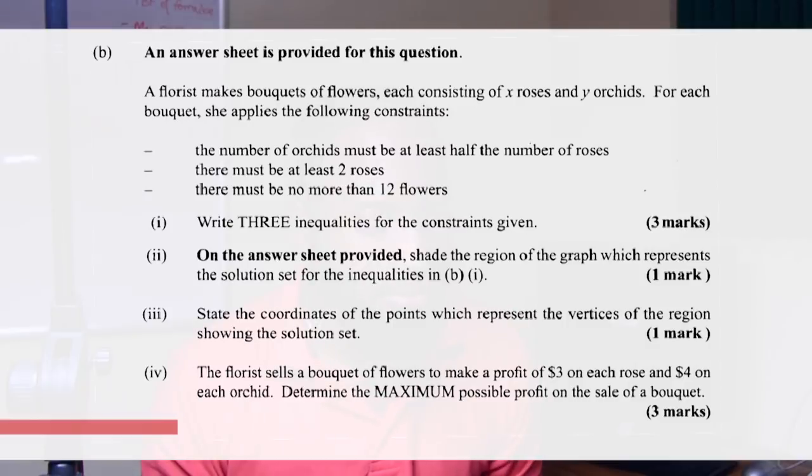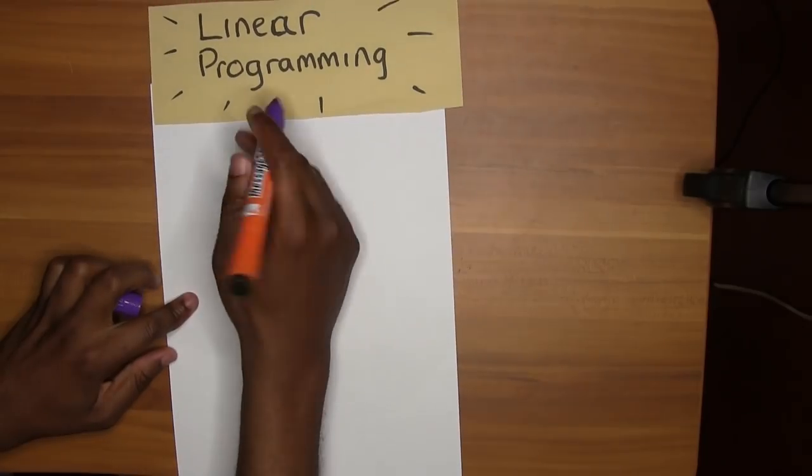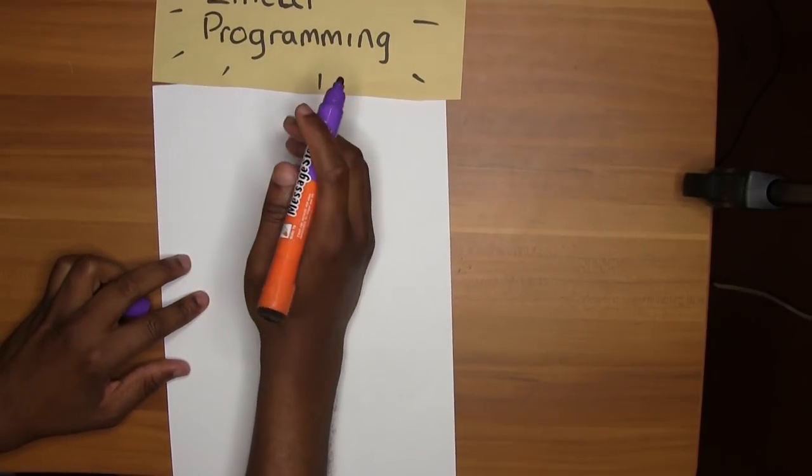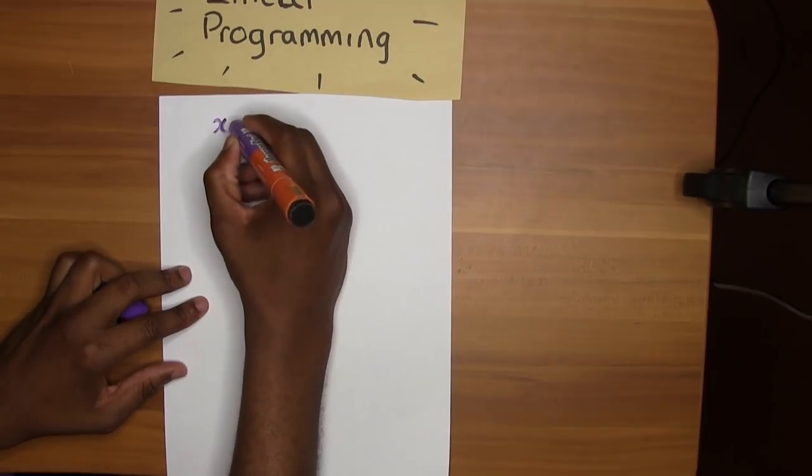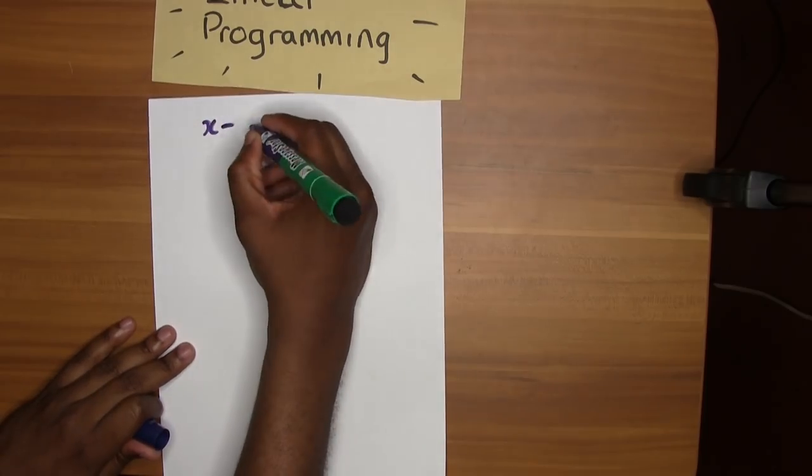Welcome back. Take a look at this linear programming question from May 2012 question 9. You can pause the video and read it. The first thing I advise you to do is highlight what you're calling roses and what you're calling orchids. So x is roses and y are the orchids.